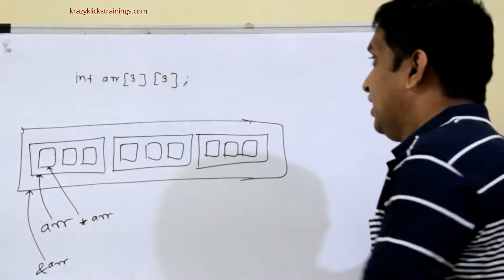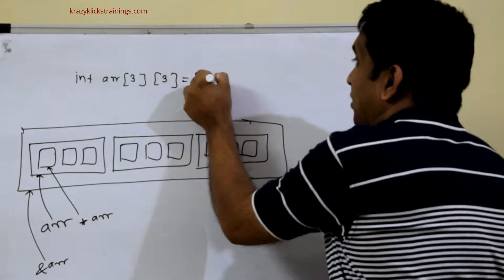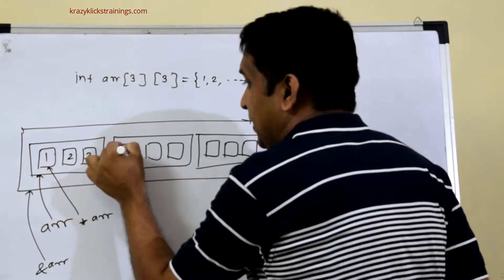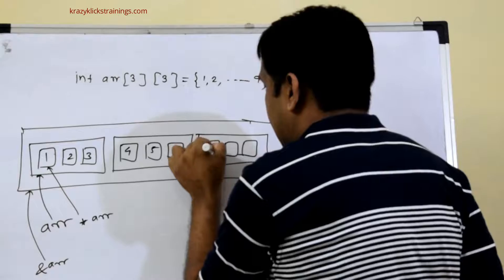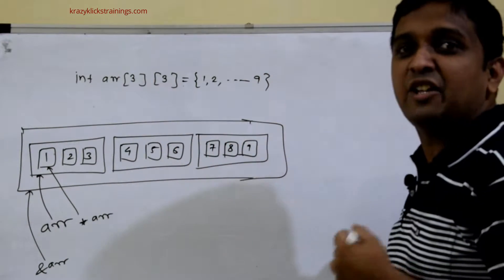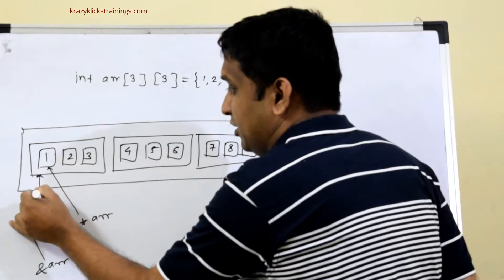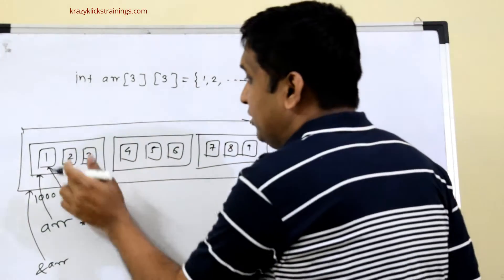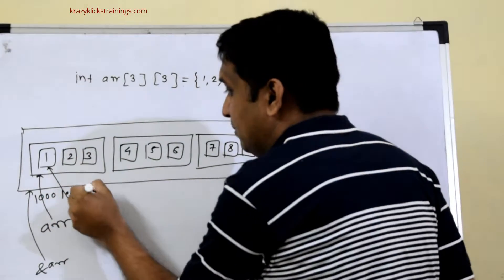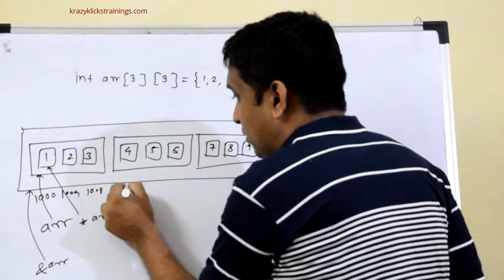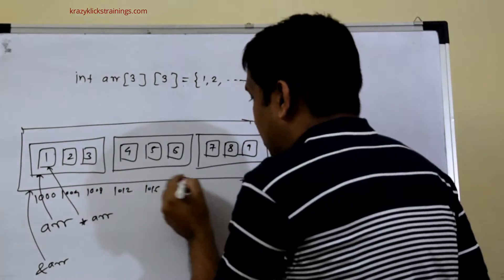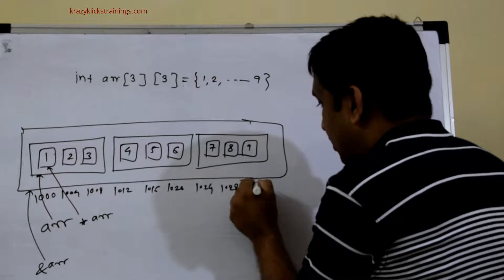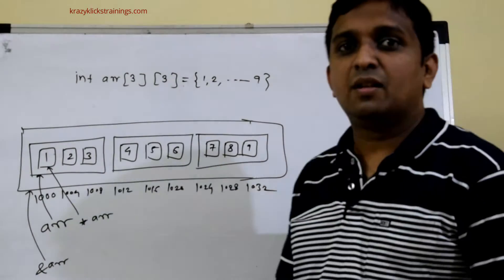Suppose I initialize this array with 9 values from 1 to 9. Those values will be stored respectively. I assume that the address of the first element is 1000, which is the base address. So for this diagram, the address of the next integer will be 1004, then 1008, 1012, 1016, 1020, 1024, 1028, and 1032.